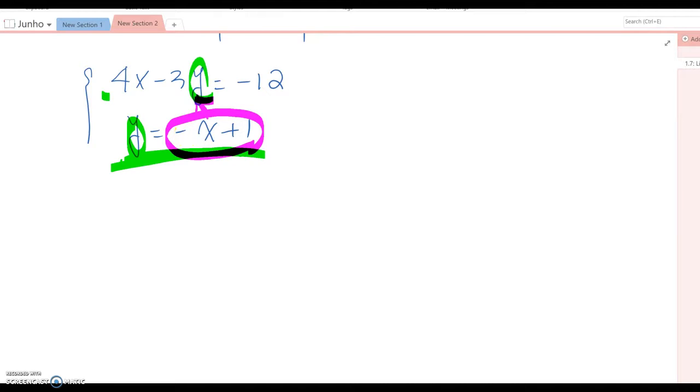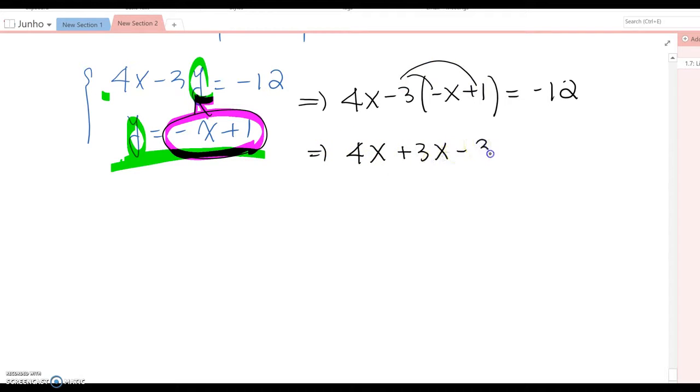Let's plug this into y. Then this becomes 4x minus 3 times negative x plus 1 equal to negative 12. Now distribute, then this becomes 4x plus 3x minus 3 equal to negative 12.